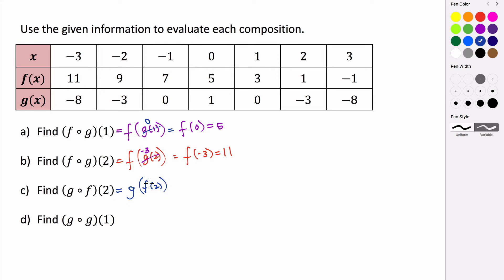For g of f of 2, first we look at the value of f when the input is 2. We go to 2 for the x value, find the output of f is 1 when x is 2. So we're evaluating g at 1. Going back to input 1, the output for g when the input is 1 is 0. So g of f of 2 is 0. f of g of 2 was 11, and g of f of 2 is 0 — so they are not the same. The order in which you compose two functions does matter.